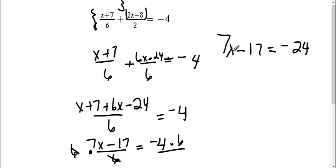Okay, now I still need to get this x by itself. So I need to move this 17. It's a negative 17, so to move it, I'm going to add 17 to both sides. Therefore, this side is gone. I'm left with 7x equals a negative 24 plus a positive 17, which gives me a negative 7.